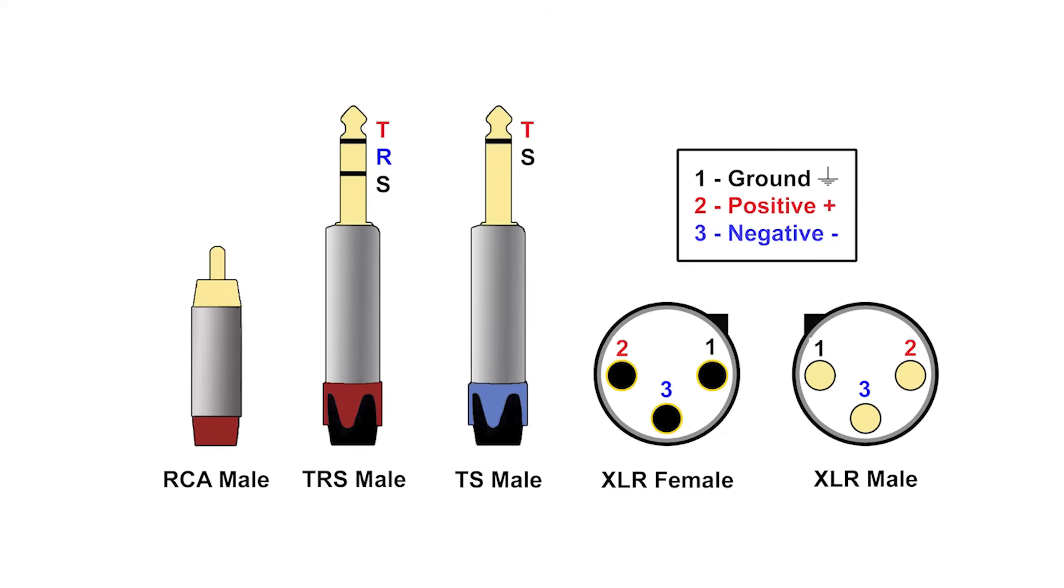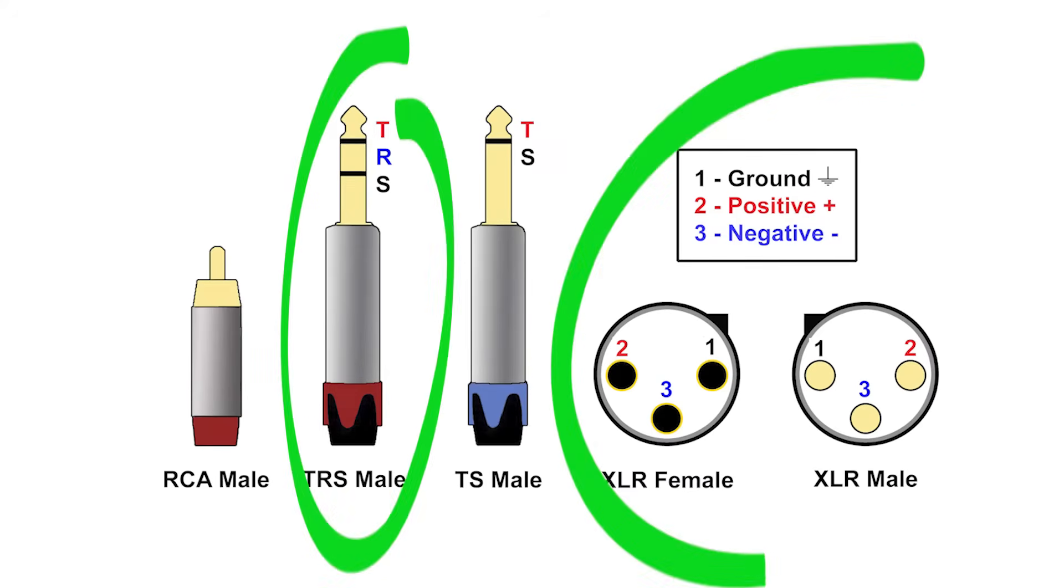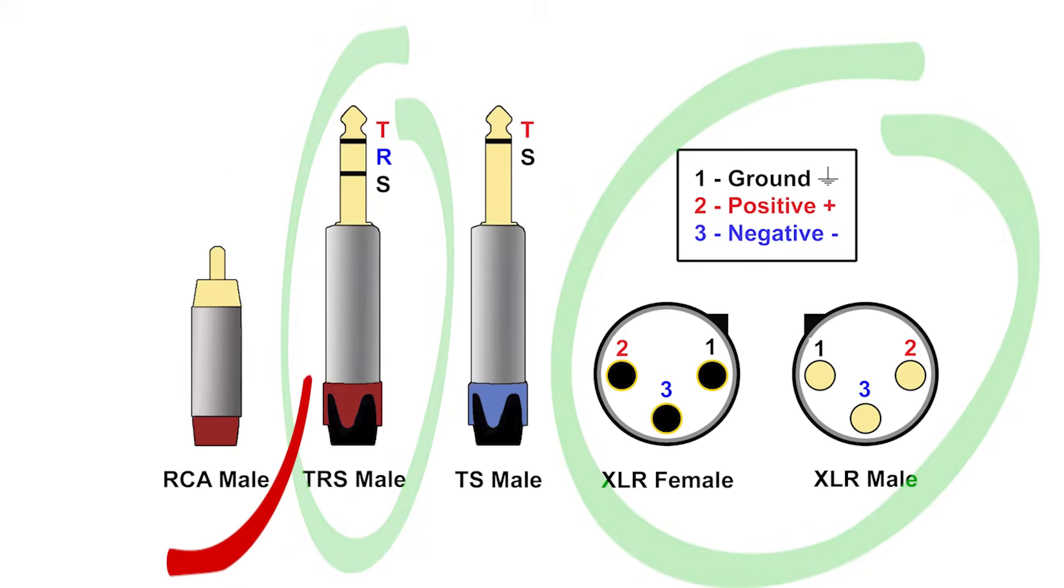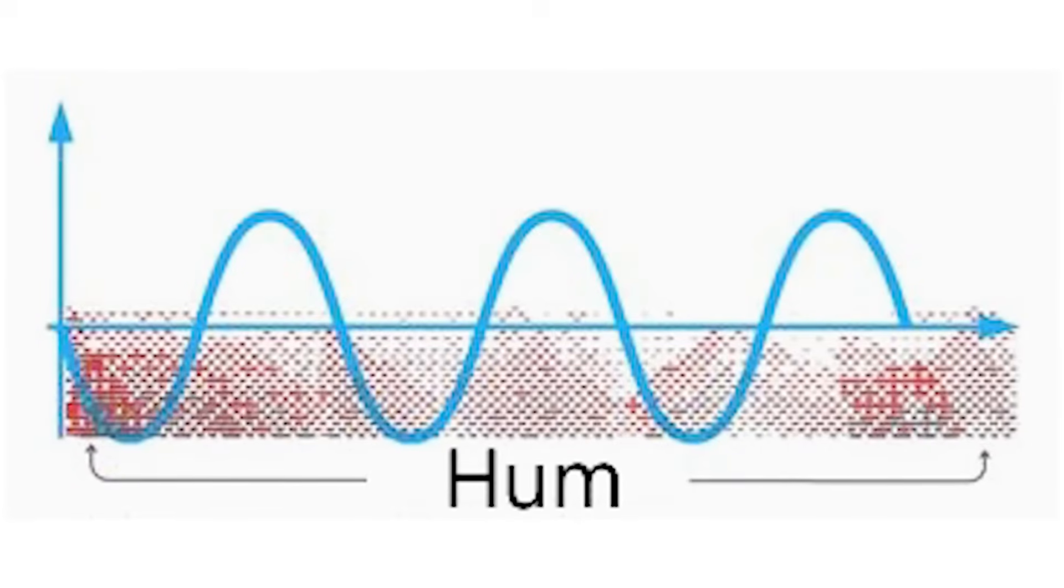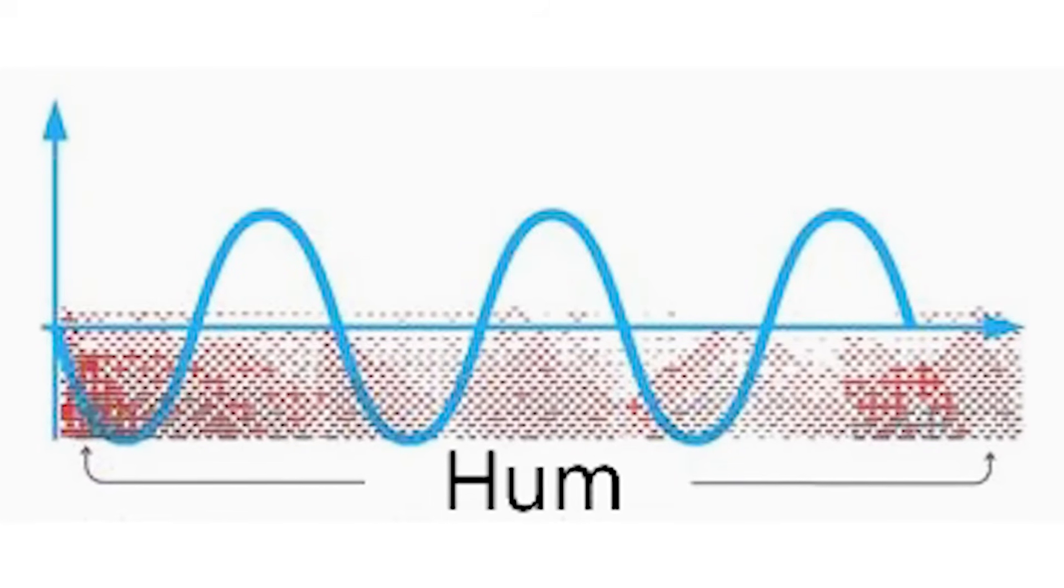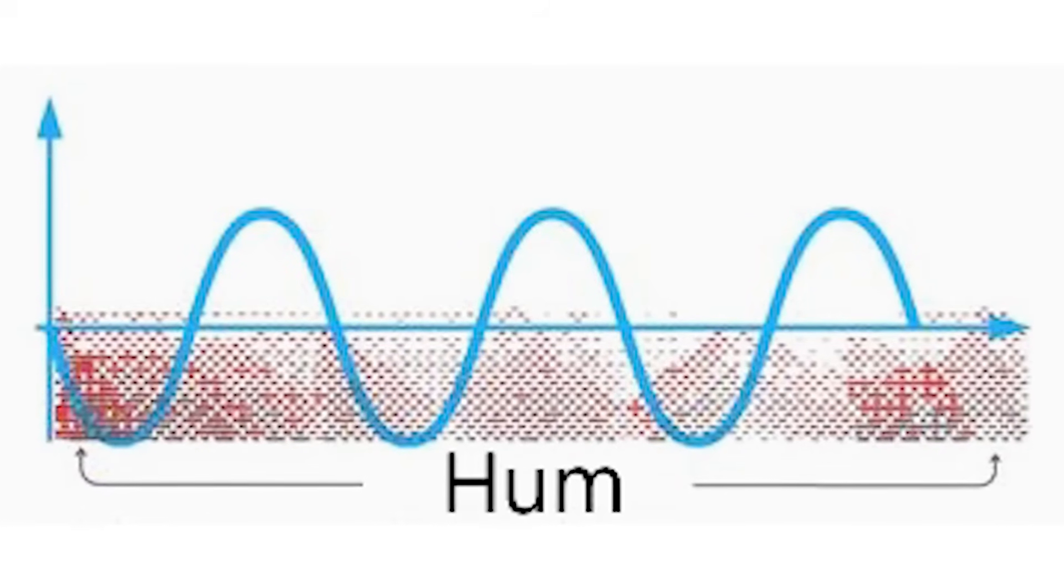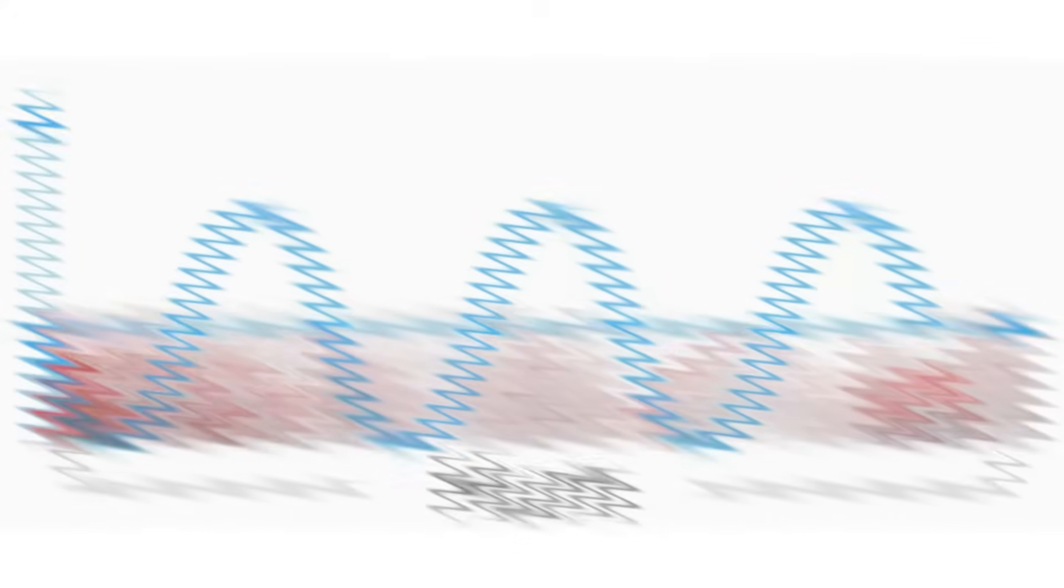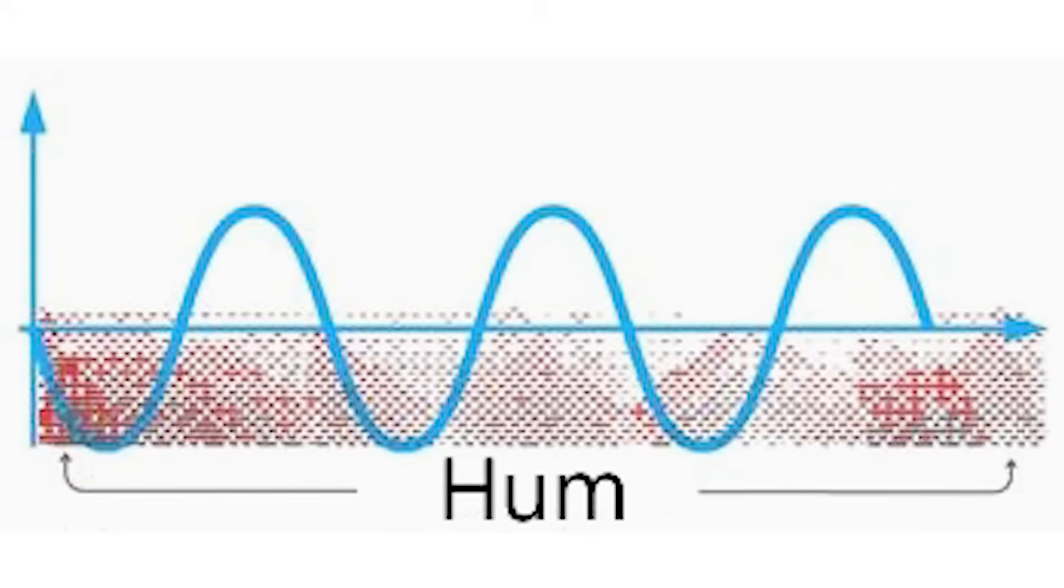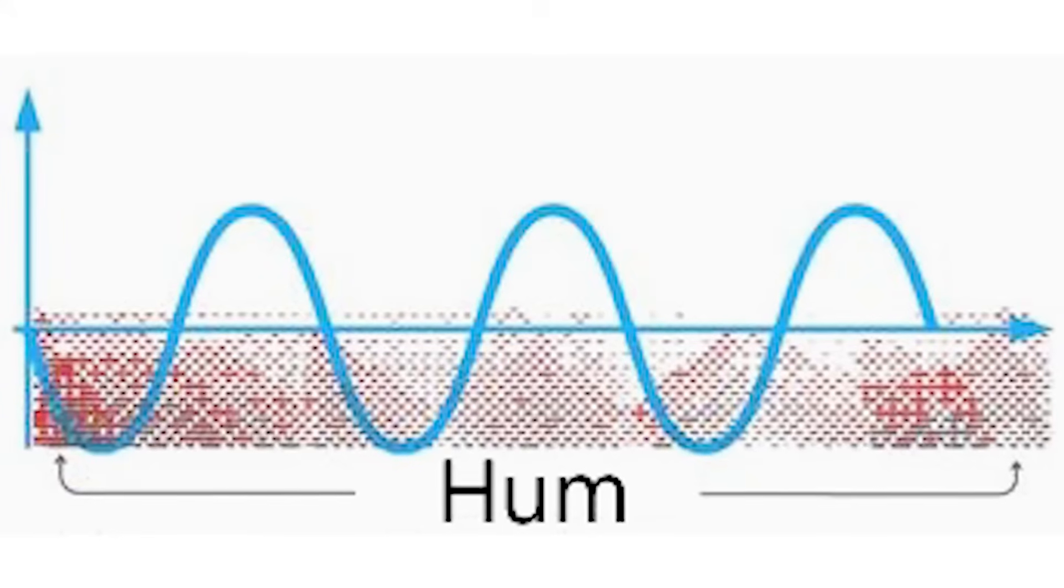In general, TRS and XLR are balanced connectors, while RCA and TS connectors are single-ended. TS connectors have the ring shorted to the sleeve. When mixing balanced and single-ended inputs and outputs, it is important to get the proper wiring configuration to avoid unnecessary hum and noise. We discourage the use of adapters as they can cause performance and reliability issues.